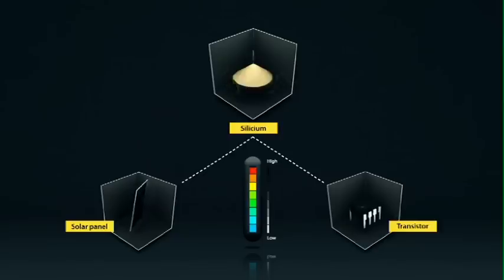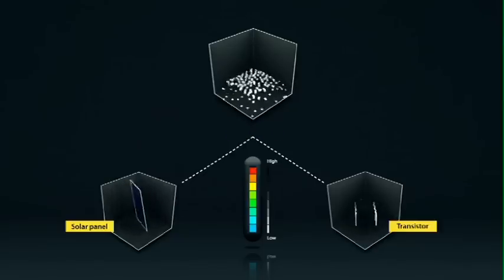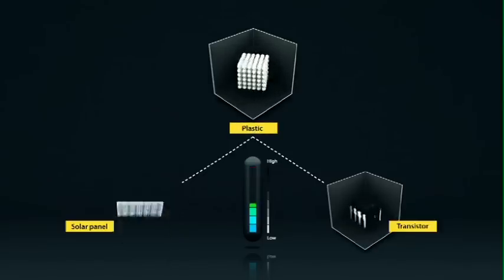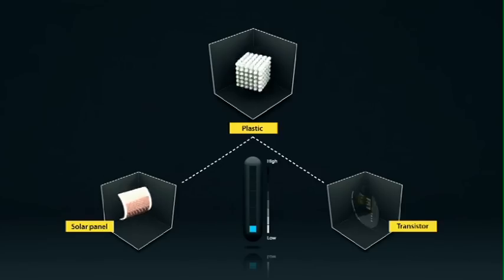Organic solar cells based on carbon atoms are easy to process and require only a minimum amount of material and energy for their production.